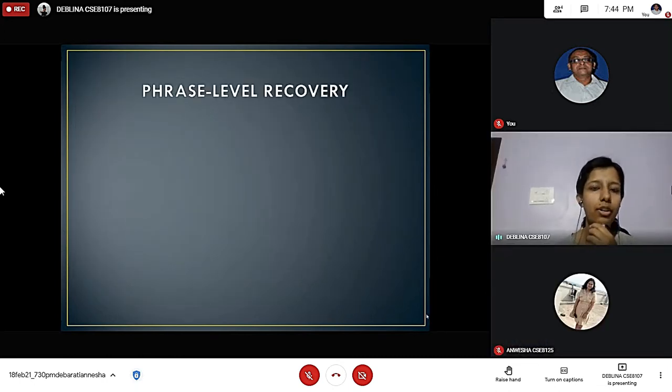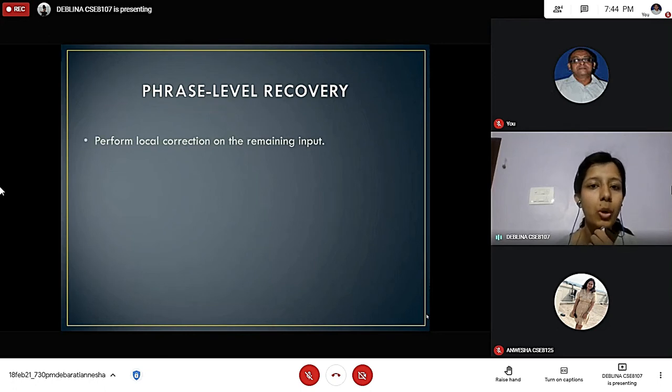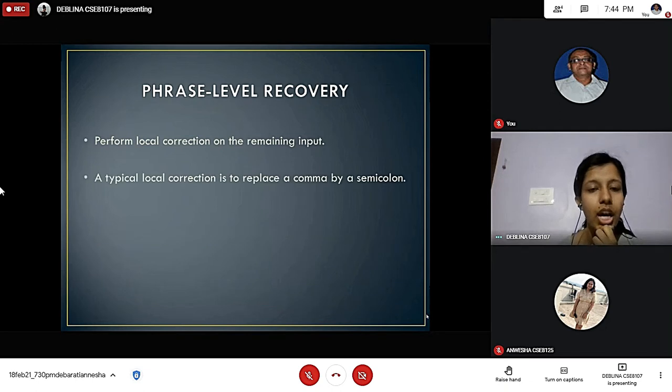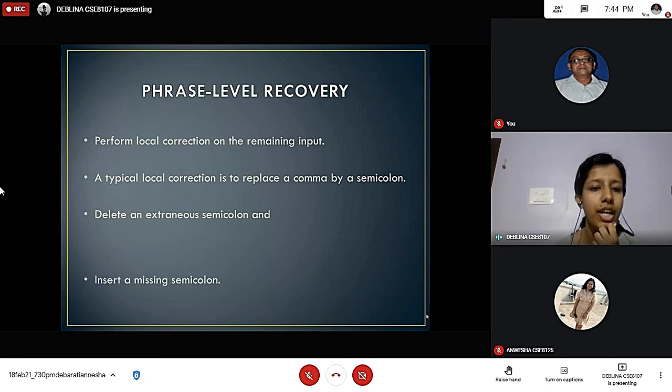Now we will talk about phrase level recovery. It performs local correction on the remaining input. A typical local correction replaces a comma by a semicolon, deletes an extraneous semicolon, and inserts a missing semicolon.